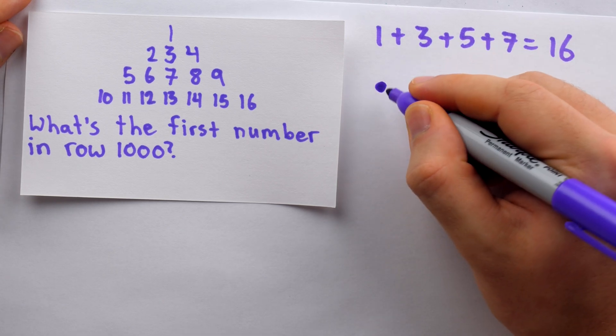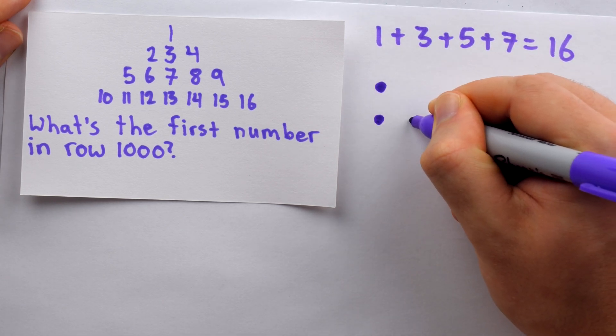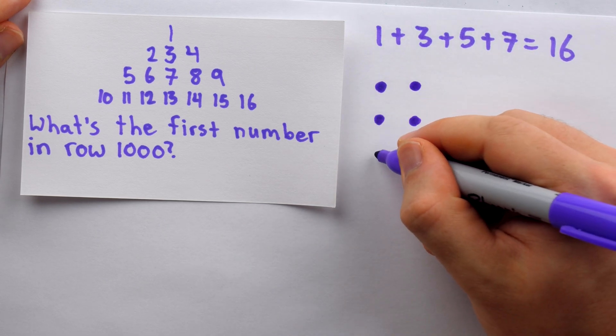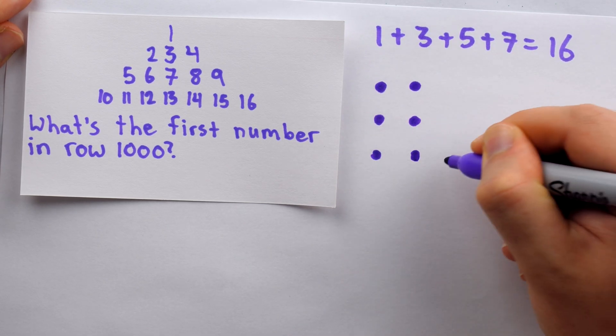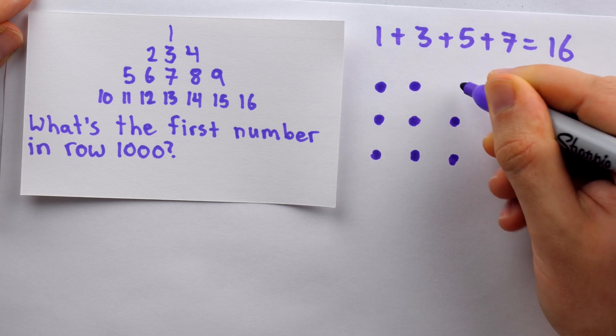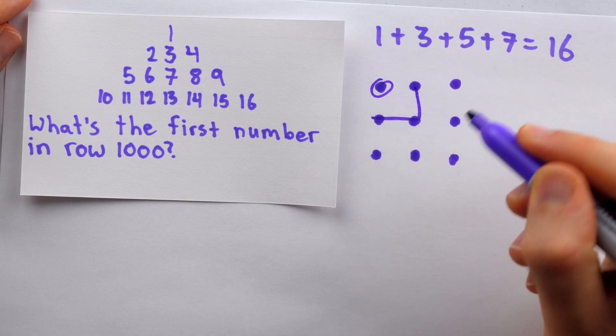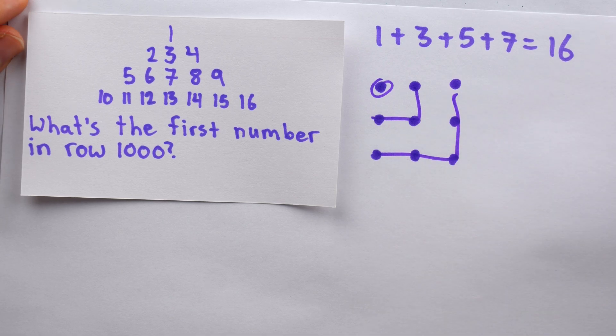Because of this beautiful property here, there's 1, I'm just representing odds with dots. And there's 1 plus 3, that's a square, that's 4. What if we add the next odd number, 5? Well, we get another square. It's a 3 by 3 square. Look at that, it's beautiful. So since adding odds together produces these squares, we know that the rows will end in squares.